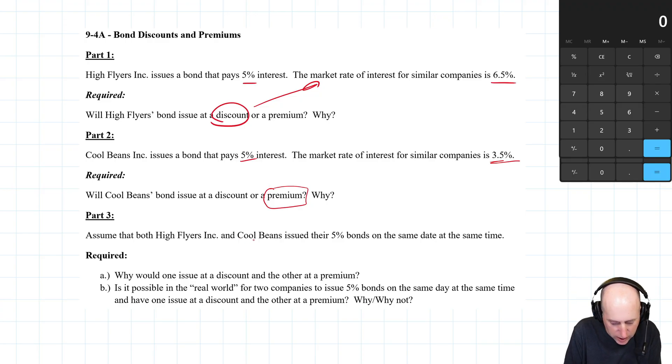Assume that High Flyers Inc. and Cool Beans issued their 5% bonds on the same date at the same time. Why would one issue at a discount and the other at a premium? The primary reason why two companies could issue at 5% and one's a discount, one's a premium is because the company's risk profiles are different.